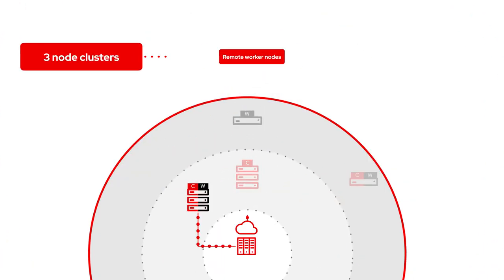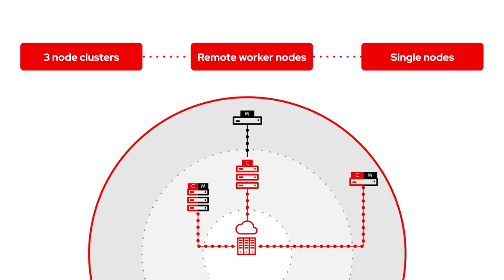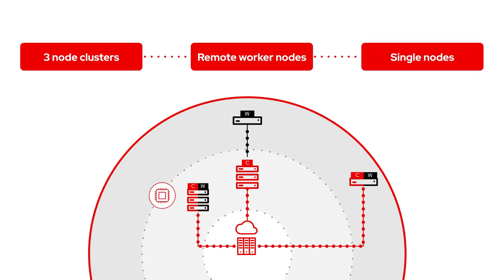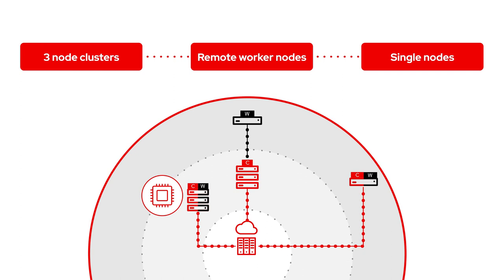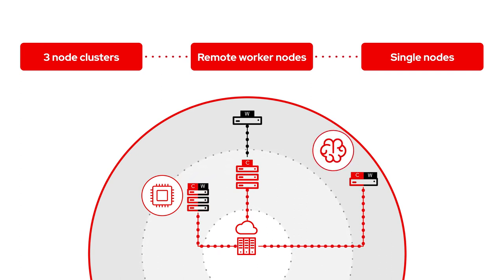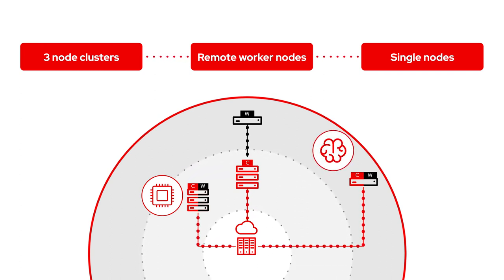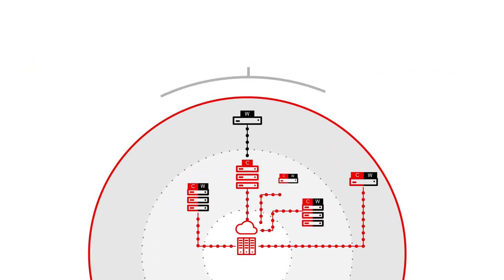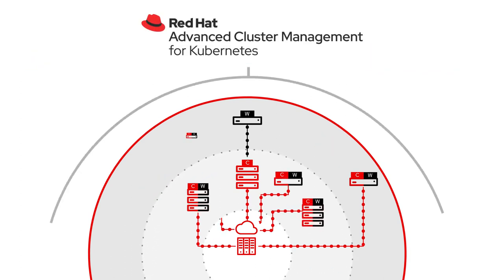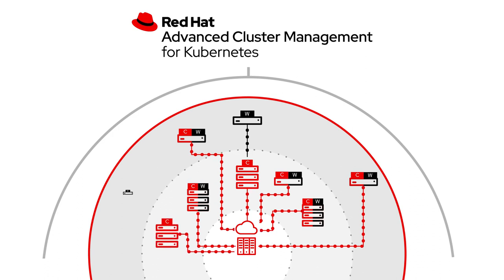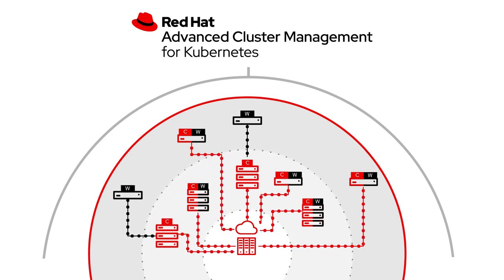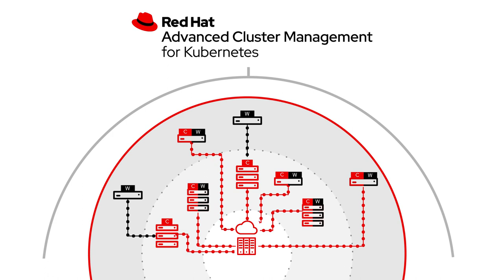All three topologies provide support for even the most demanding workloads, including GPU-enabled nodes and AI/ML-powered intelligent apps that enable inferencing and real-time decisions at the edge. They can be mixed and matched as needed, and all can be managed centrally and consistently through Red Hat Advanced Cluster Management for Kubernetes.